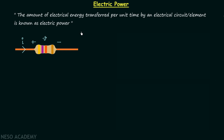According to the definition of electric power, the amount of electrical energy transferred per unit time by an electrical circuit or electrical element is known as electric power. In simple words, electric power is the time rate of change of electrical energy.